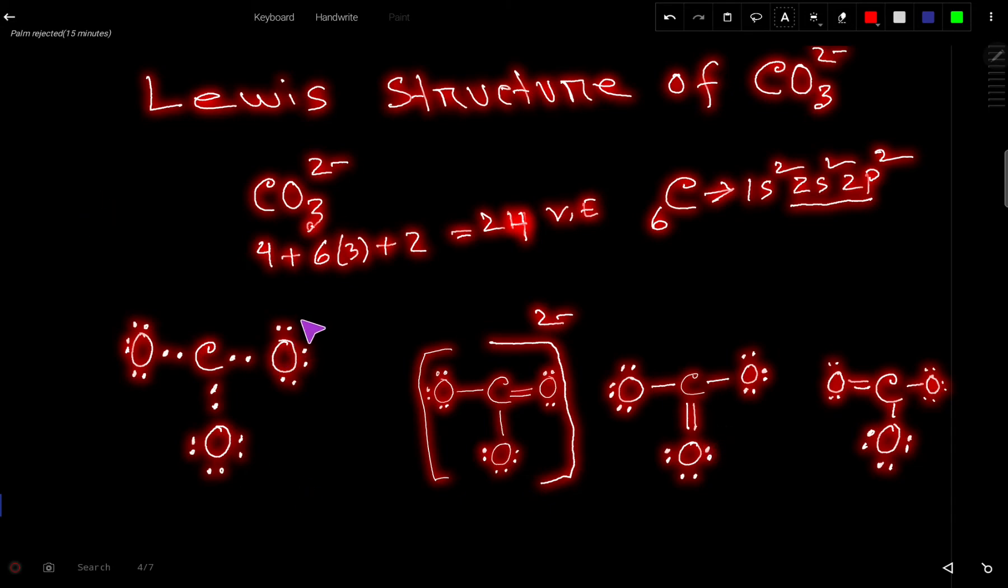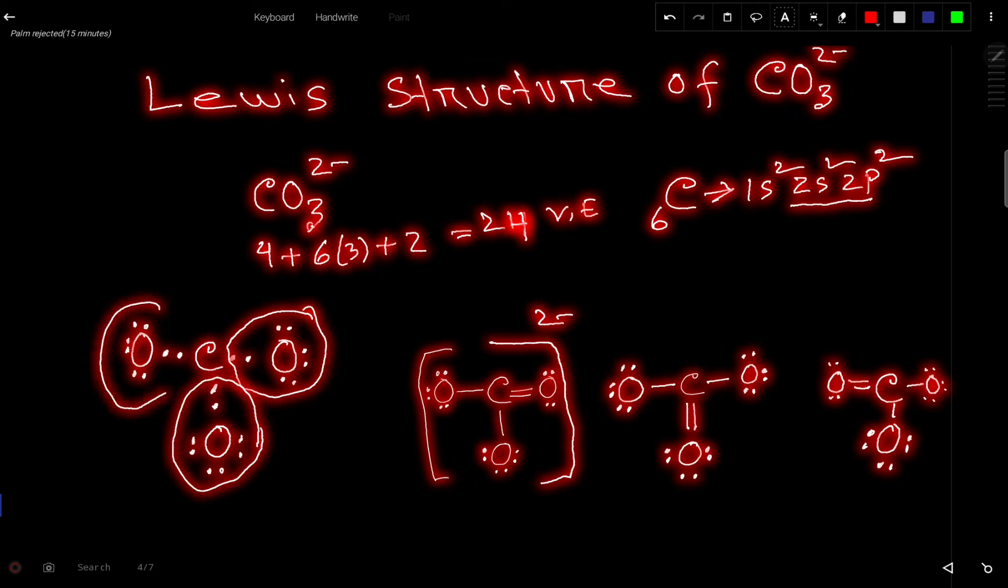Now this oxygen has 8, this oxygen also has 8, and this oxygen also has 8. So this carbon has 4 valence electrons, but we need to satisfy the octet for this carbon.